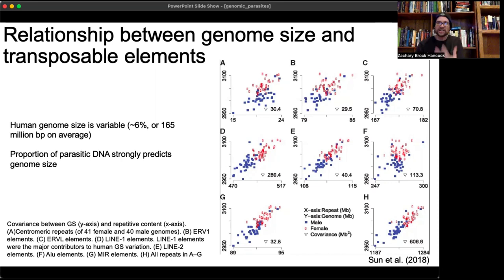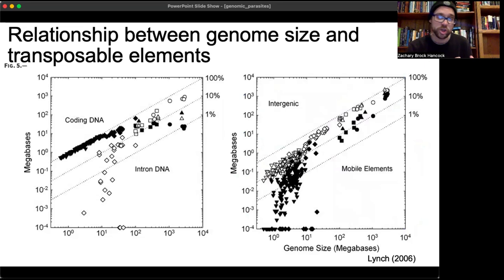We see this not just in humans, but across the tree of life — as genome sizes get bigger, more and more of the genome is occupied not by functional coding elements, but by mobile elements and intergenic elements.